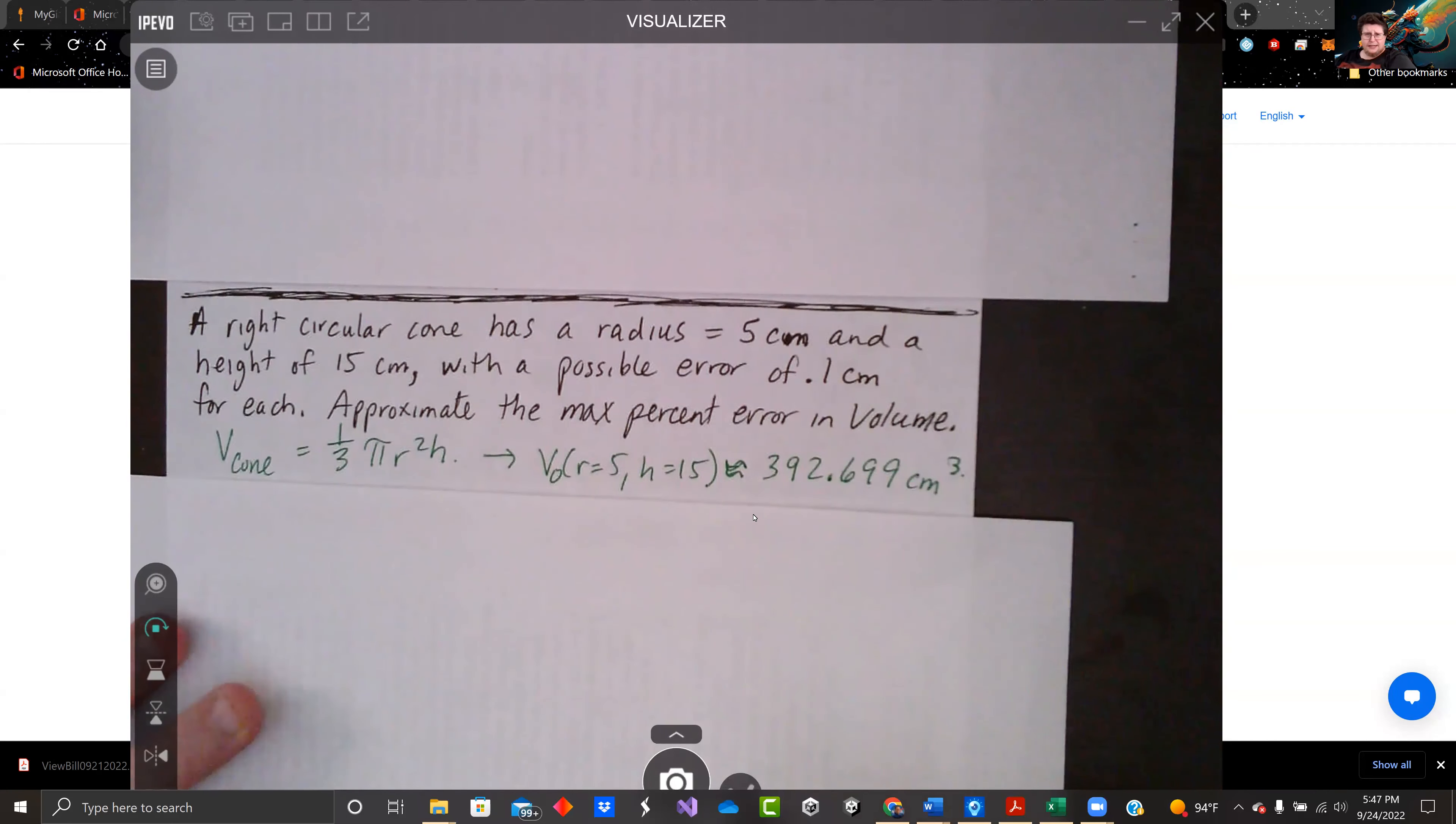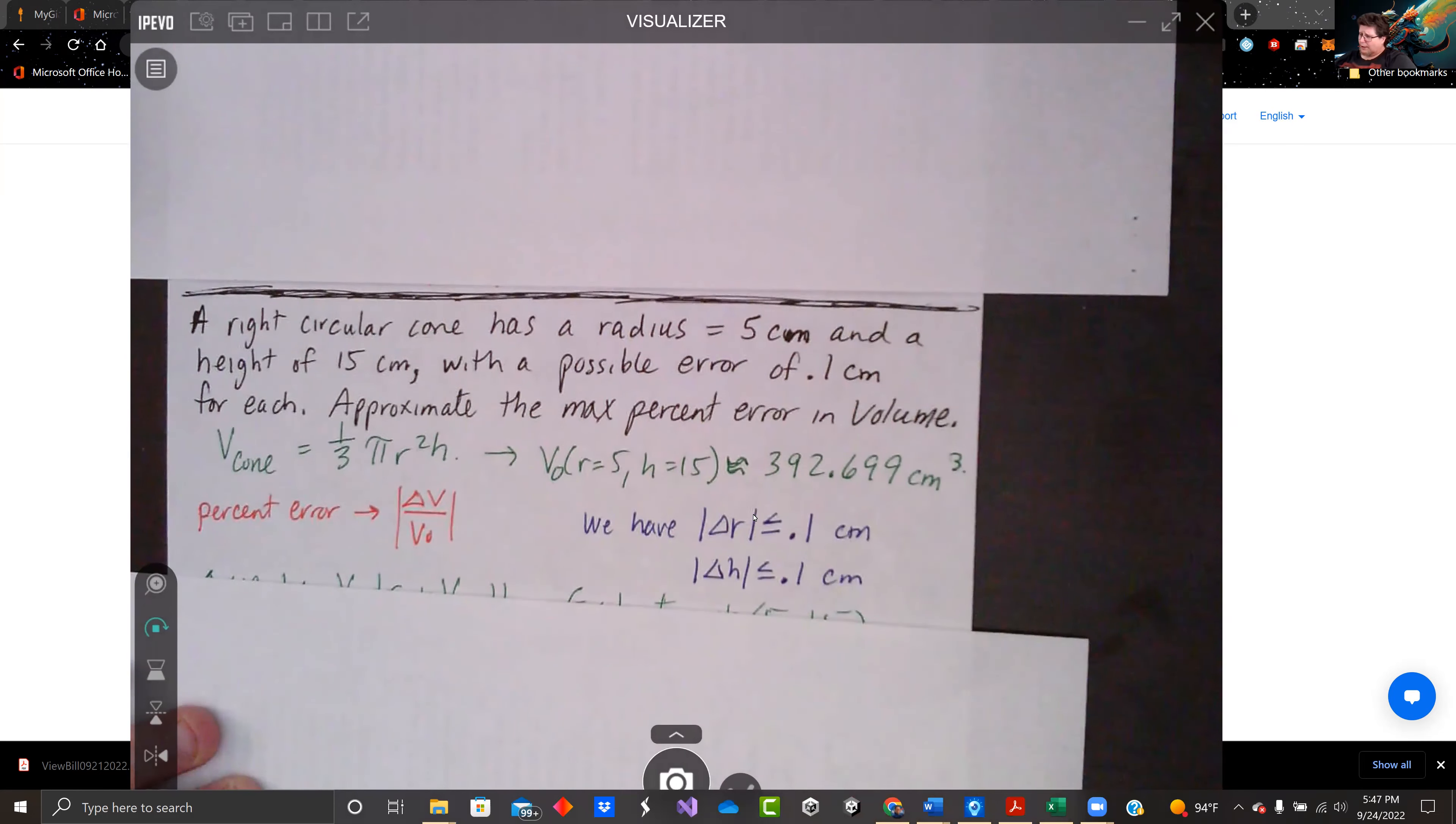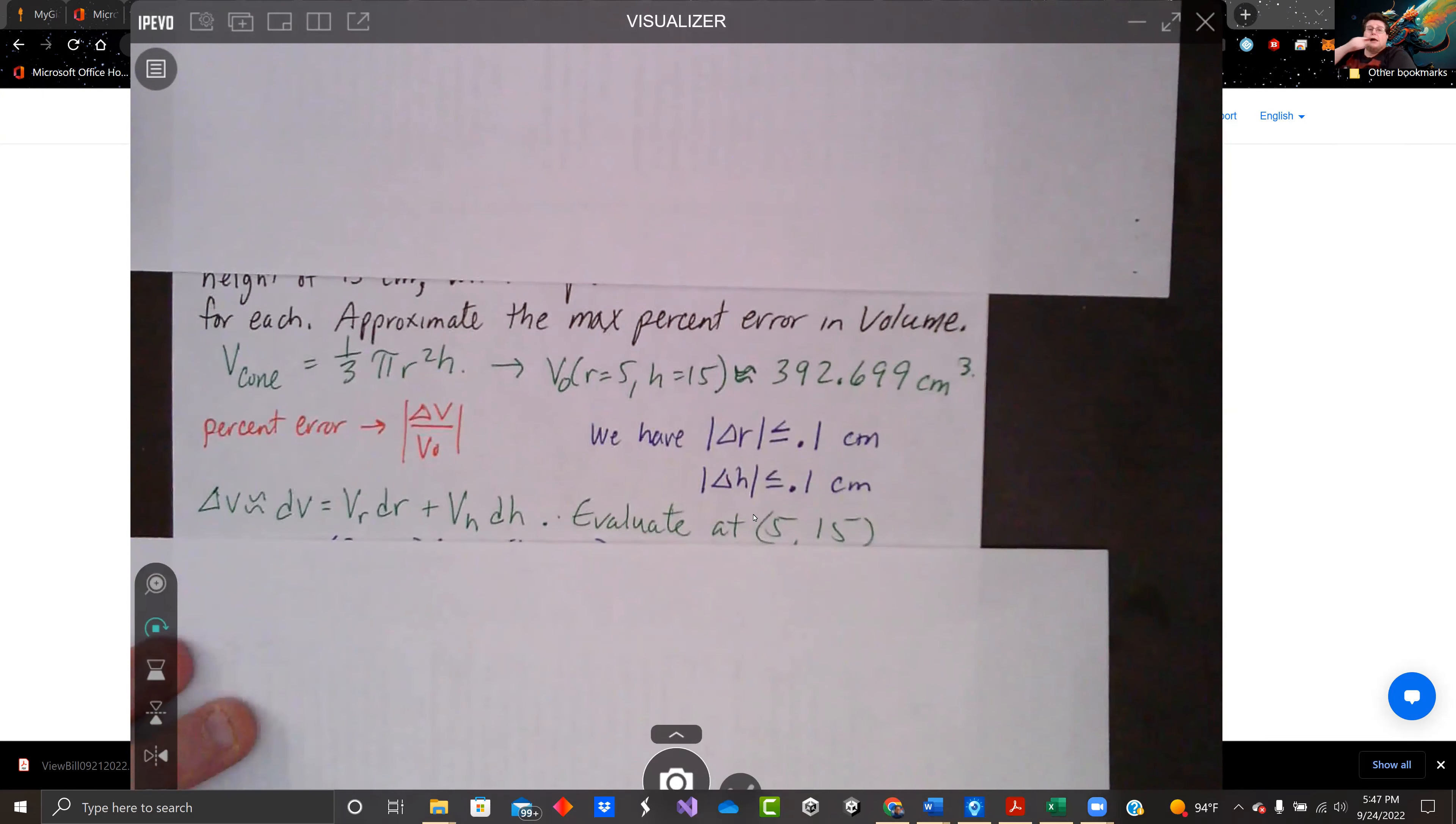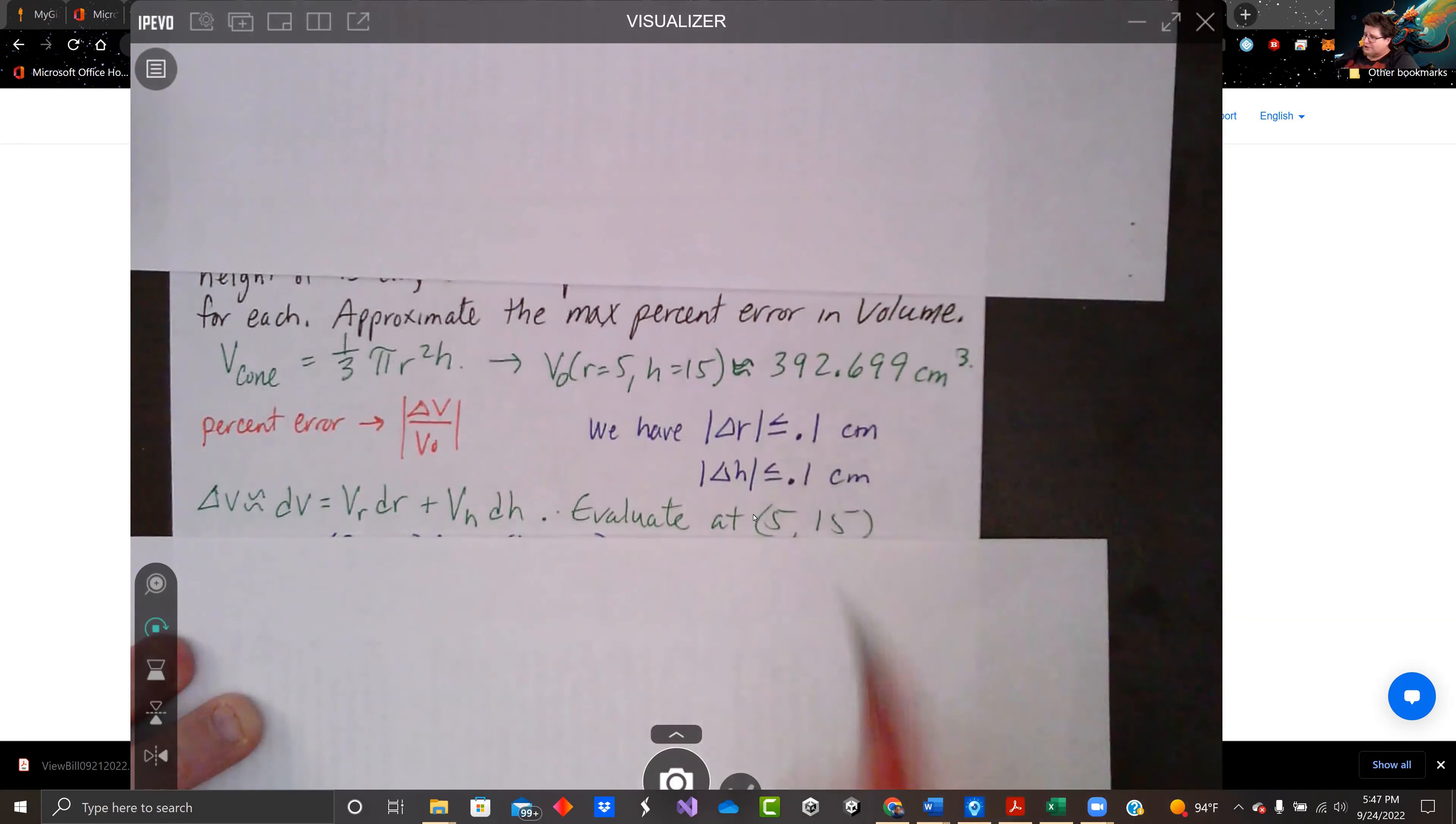So the volume of a cone is one-third pi r squared h. And so if we look at the initial volume here, plugging in r equals 5 and h equals 15, we have approximately 392.7 cubic centimeters. How much is the error? So we have delta r and delta h are both 0.1. Delta V is going to be dV, approximately our total differential of V, which is the partial derivative of V with respect to r times dr, plus our partial derivative of V with respect to h times dh. And we want to evaluate that at the 5 and 15 that we have using our delta r and delta h here.